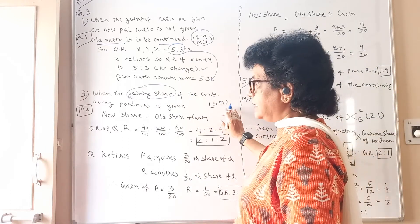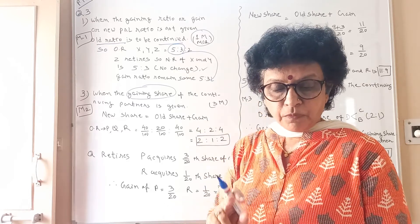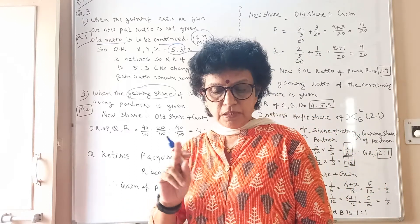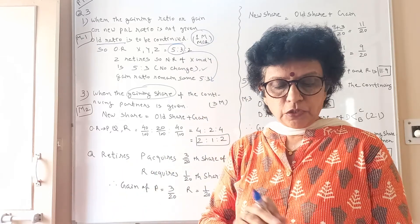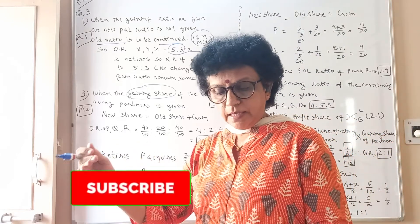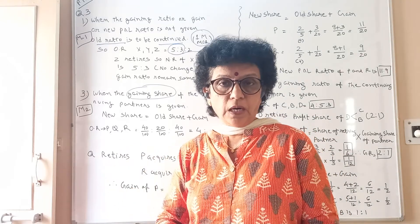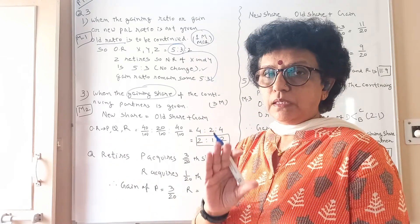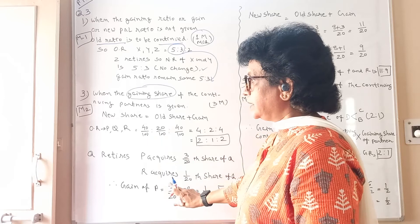For 3 marks they do ask this type of question. Question 3 in your exercise: P, Q and R are partners sharing profit and loss in the ratio of 40%, 20% and 40% respectively. Q retires. The retiring partner is Q. P is acquiring 3/20 and R is acquiring 1/20 portion from Q's share. This is the information about how much each has gained from the retiring partner.